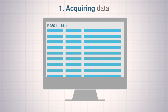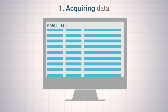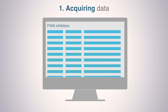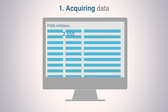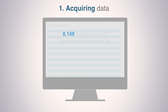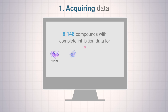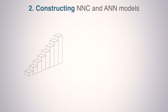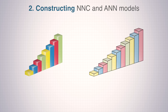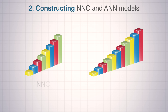First, we acquired experimentally validated data for P450 inhibitors and identified compounds with complete inhibition data for five P450 enzymes. Next, we constructed two NNC models, NNC1 and NNC2.